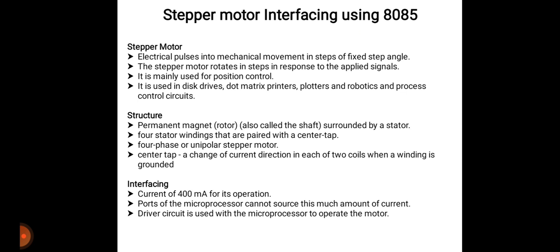What is the structure of a stepper motor and how is it designed? A stepper motor has a permanent magnet which is called a rotor, also called a shaft. The rotor is surrounded by a stator. The most common stepper motors have four stator windings paired with a center tap. This type of stepper motor is commonly referred to as a four-phase or unipolar stepper motor. The center tap allows a change of current direction in each of the two coils when a winding is grounded, resulting in a polarity change of the stator.